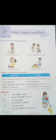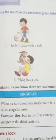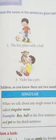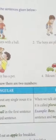Circle the nouns in the sentences given below. First sentence: The boy plays with a ball. In me korn korn se nouns hai? Boy and ball. Second sentence: The boys are playing with cards. Again is me korn korn se nouns hai? Boys, cards.